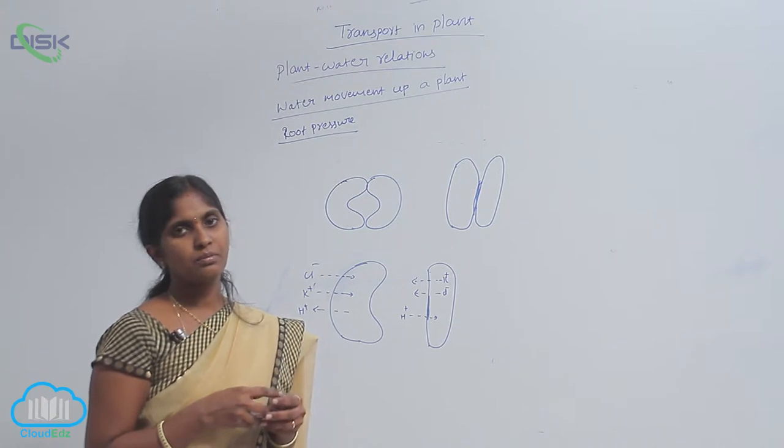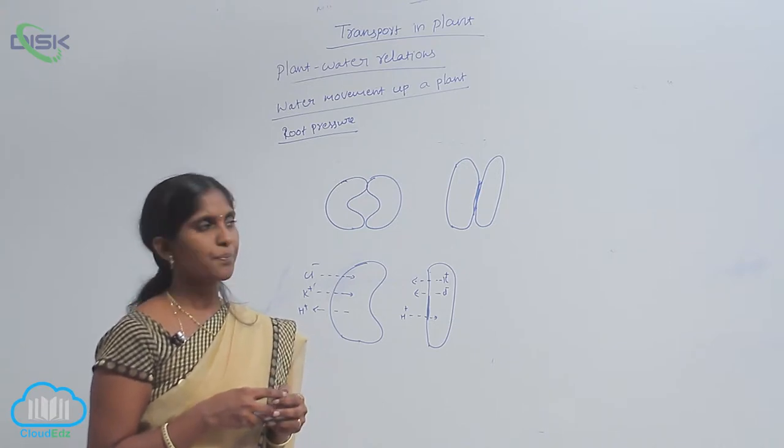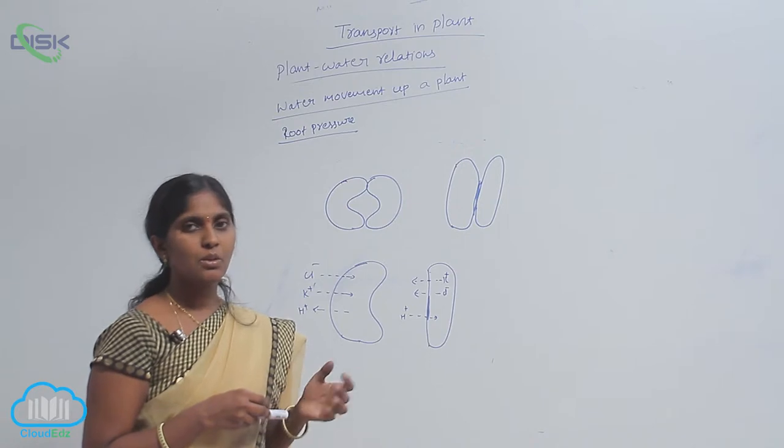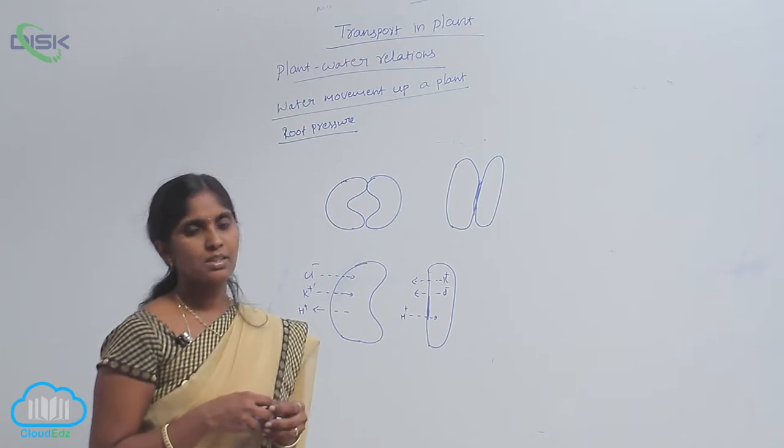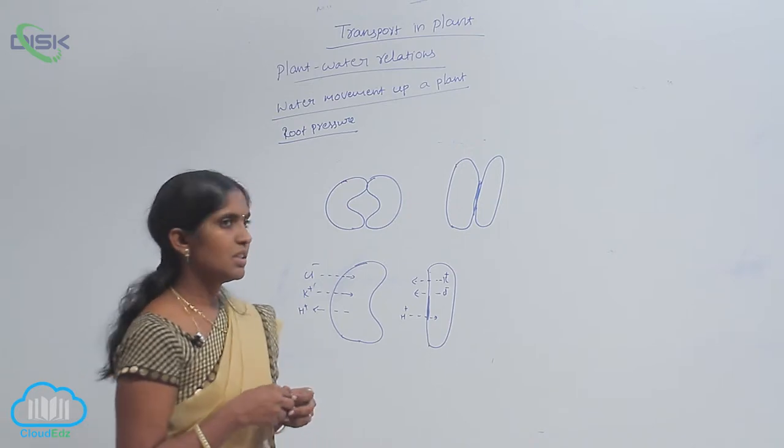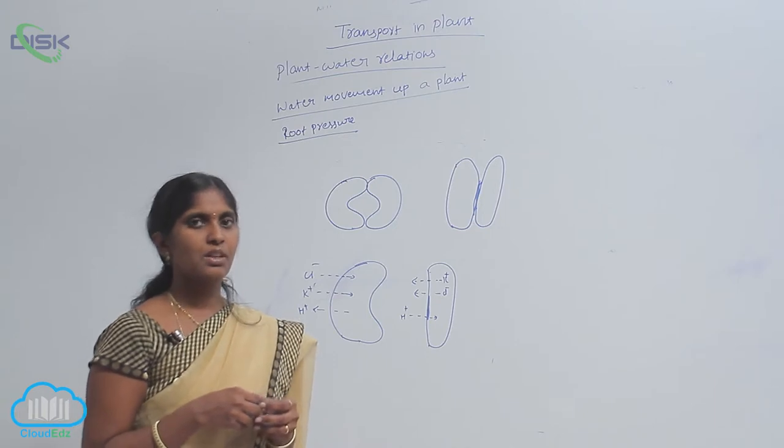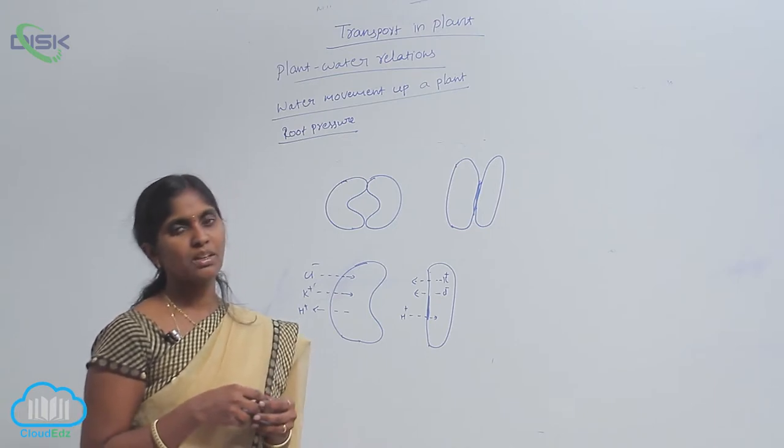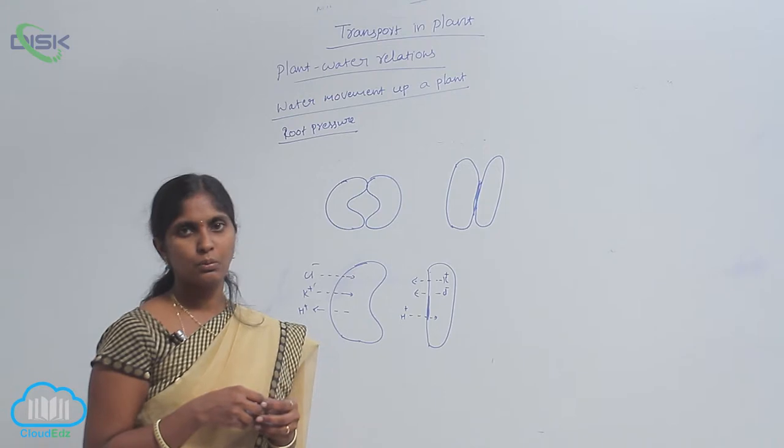Beside the guard cells there are subsidiary cells. Based on the orientation of subsidiary and guard cells, the stomata are divided into many types.